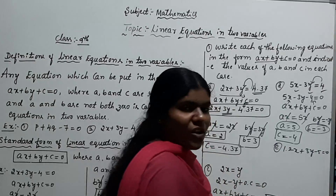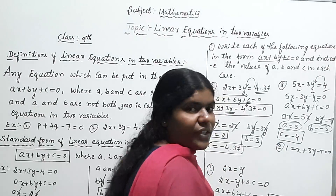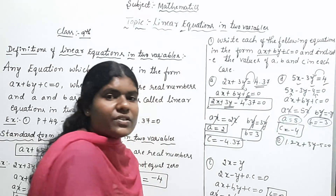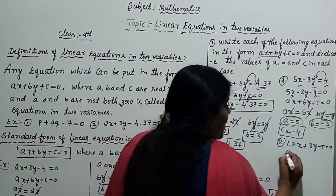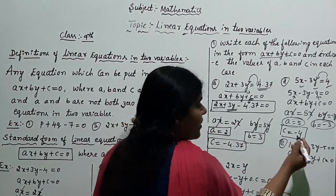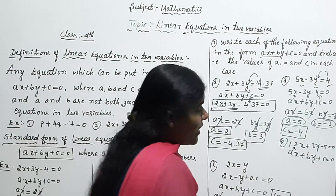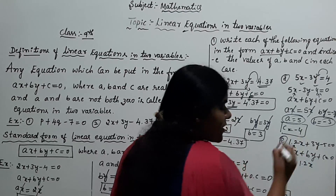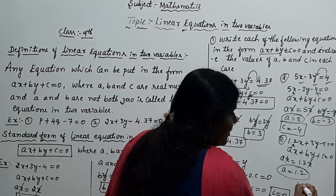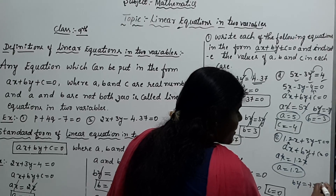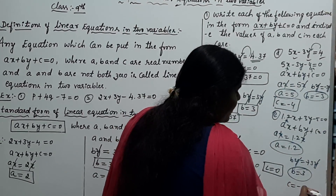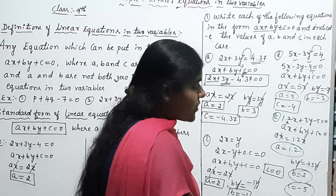Last example: 1.2X plus 3y minus 5 equals zero. The given expression is already in the form of a linear equation in two variables. Comparing directly: AX equals 1.2X, so X cancels and A equals 1.2. BY equals 3Y, so Y cancels and B equals 3. The constant term C equals minus 5.